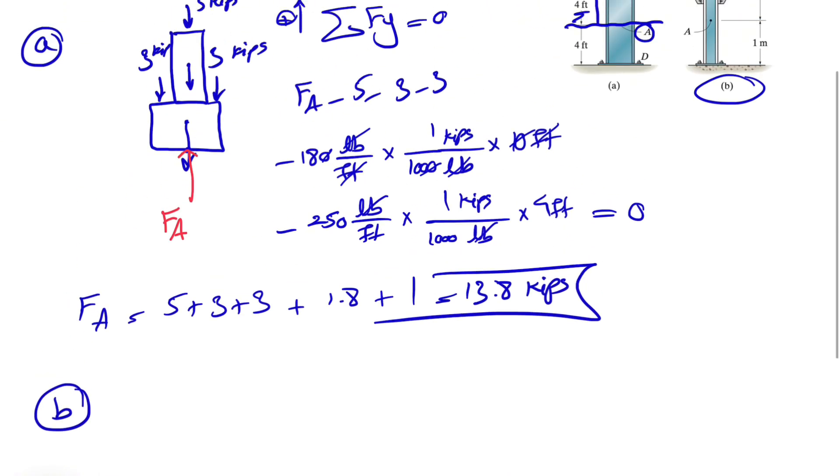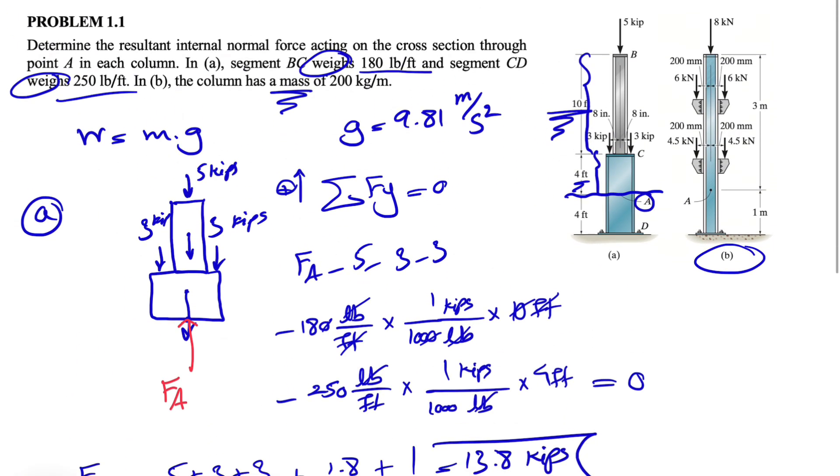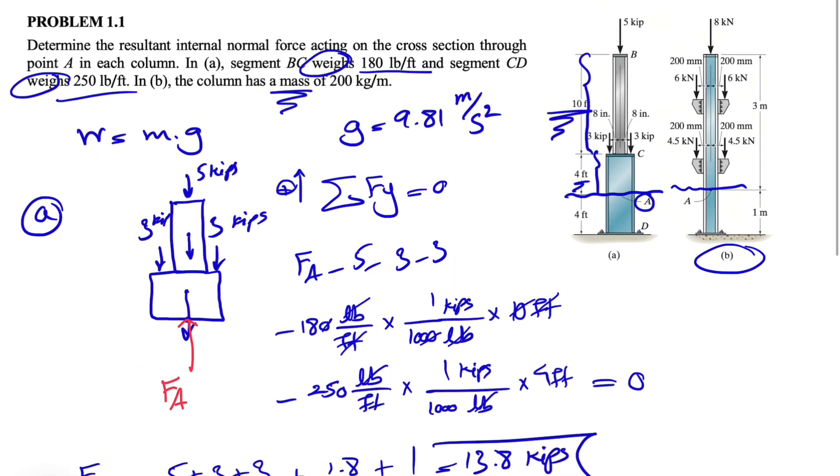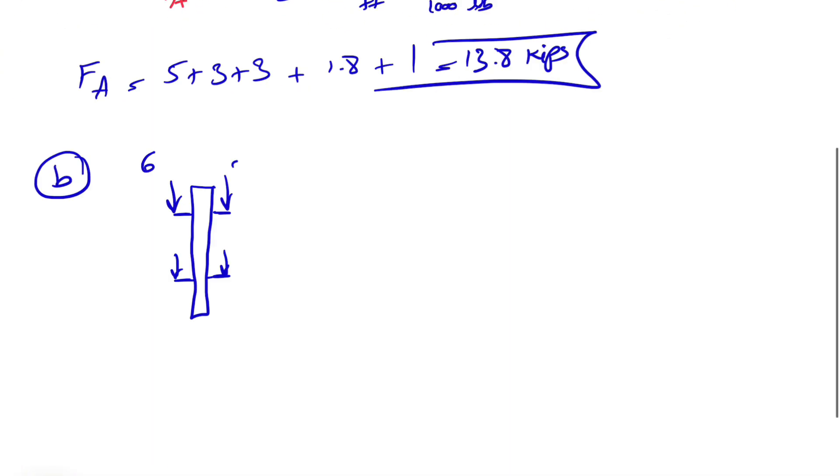So that's the answer for part A. Let's move on to part B. If we look at part B, again we're going to do this section. We have our column and we have four forces. The top two are six, and we have two 4.5s.